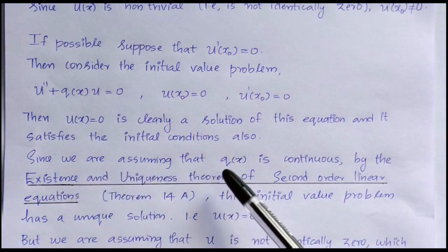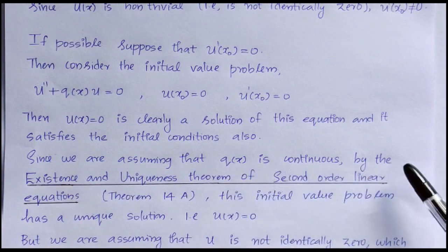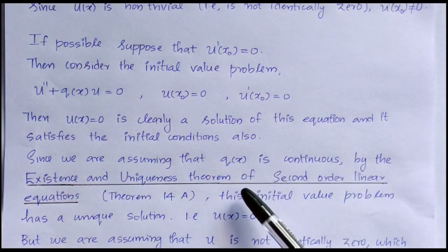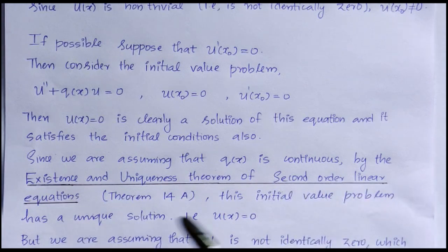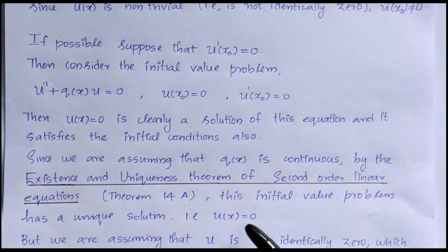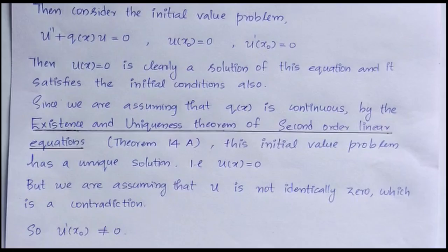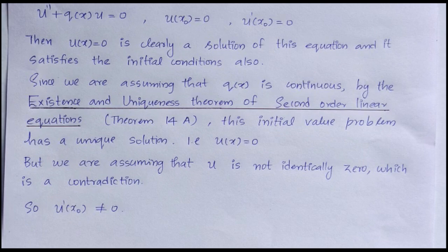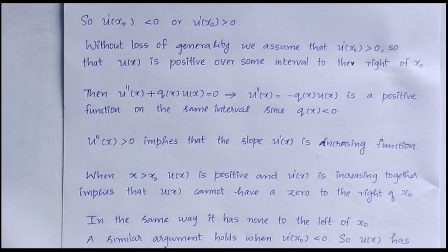Since we are assuming that q(x) is continuous, by the existence and uniqueness theorem for second-order linear equations, this initial value problem has a unique solution, that is, u(x) = 0. But we are assuming that u is not identically zero, which is a contradiction. So u'(x0) cannot be zero, which means u'(x0) is either less than or greater than zero.